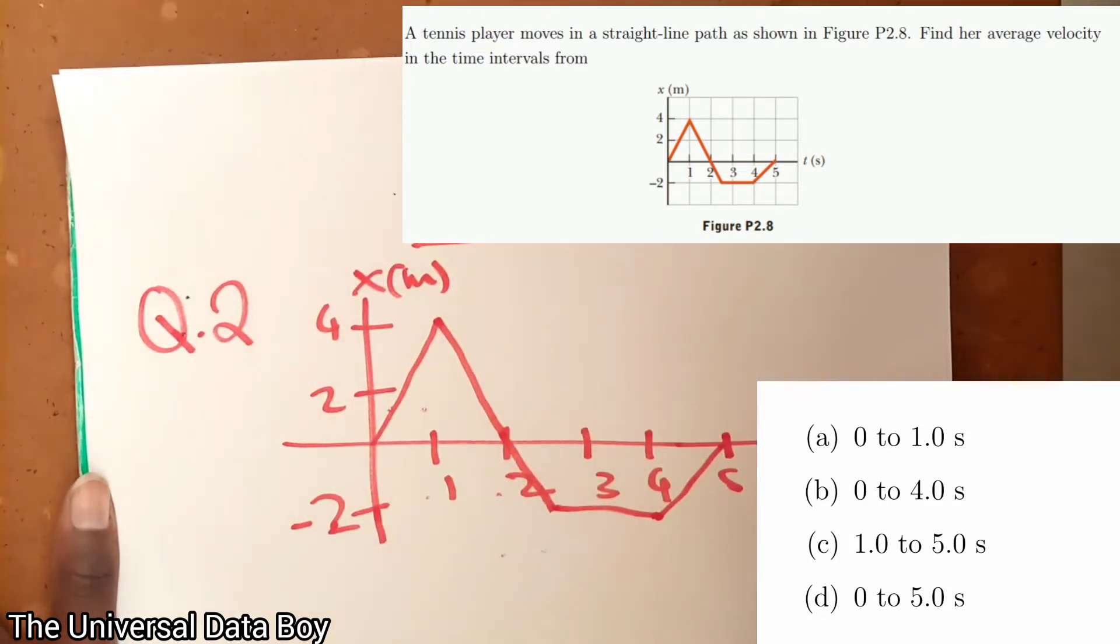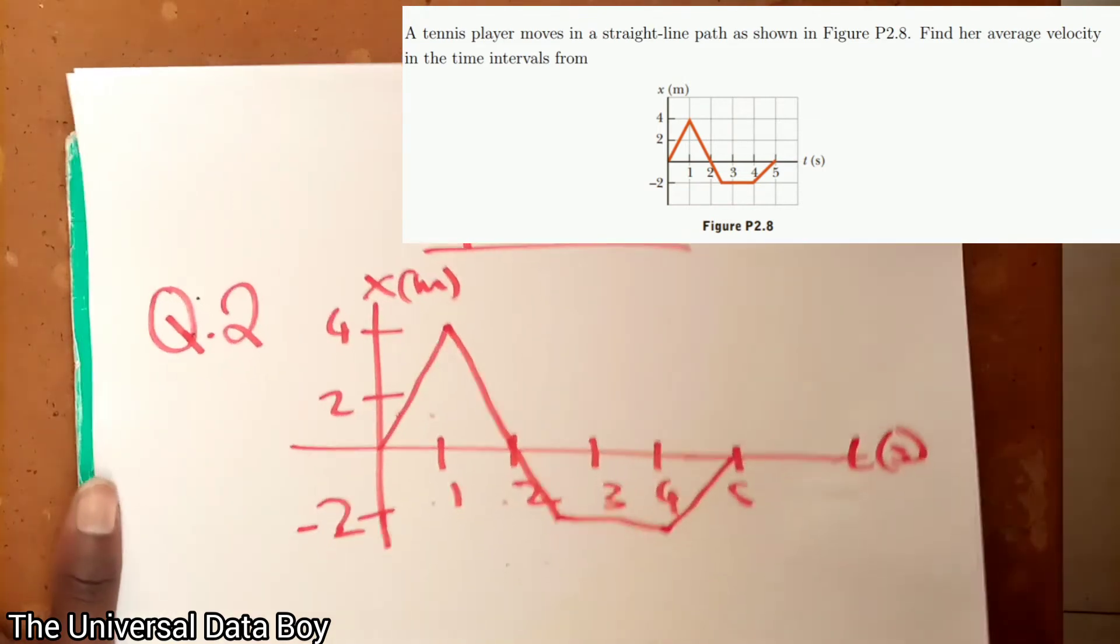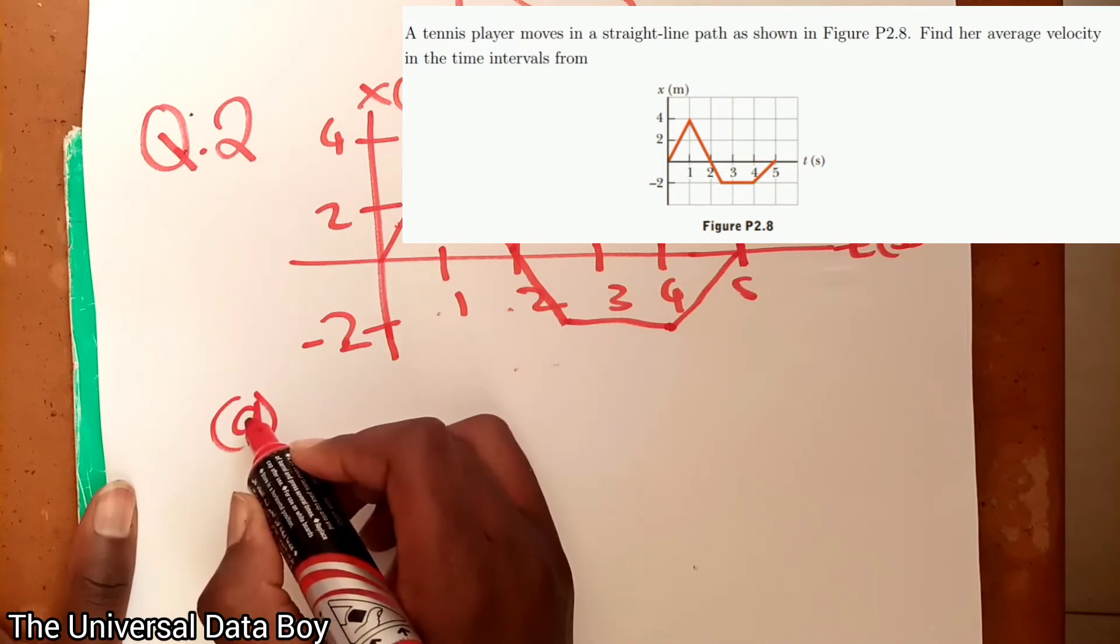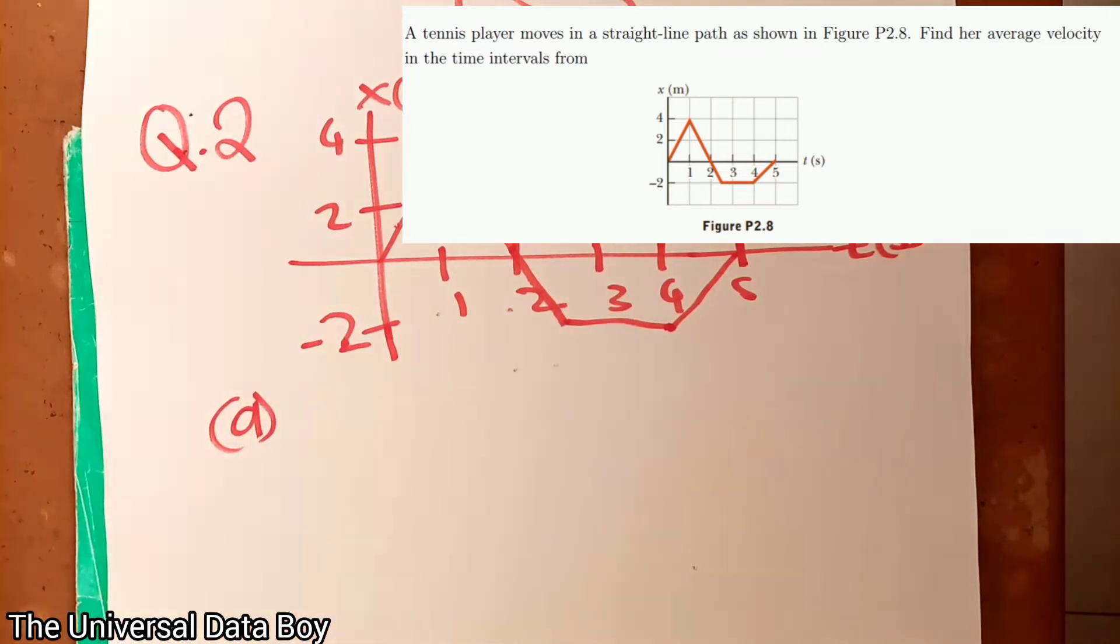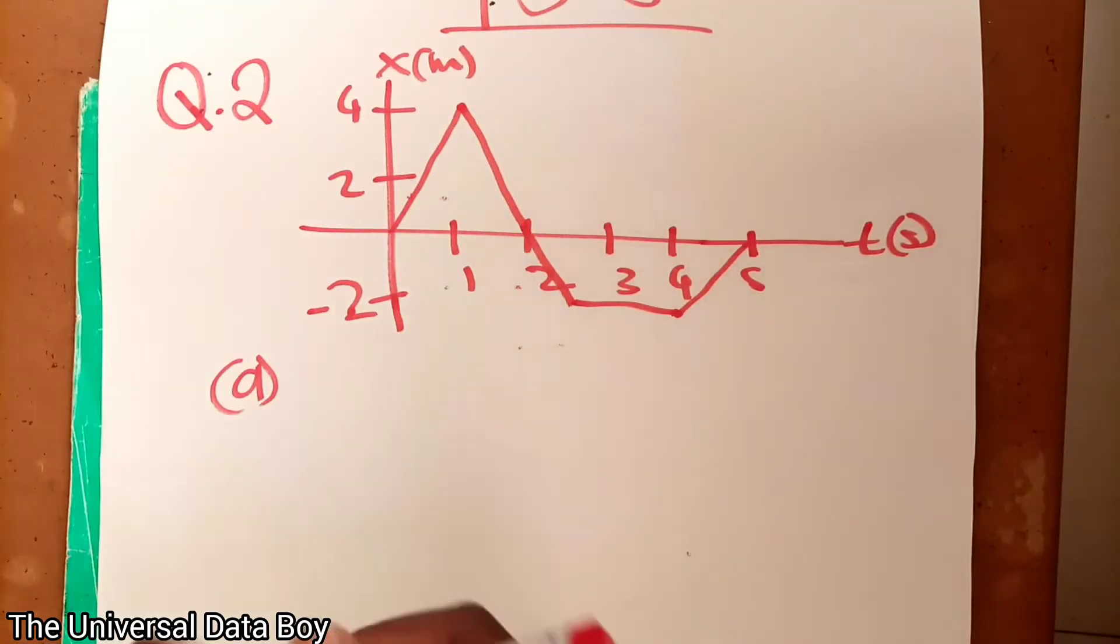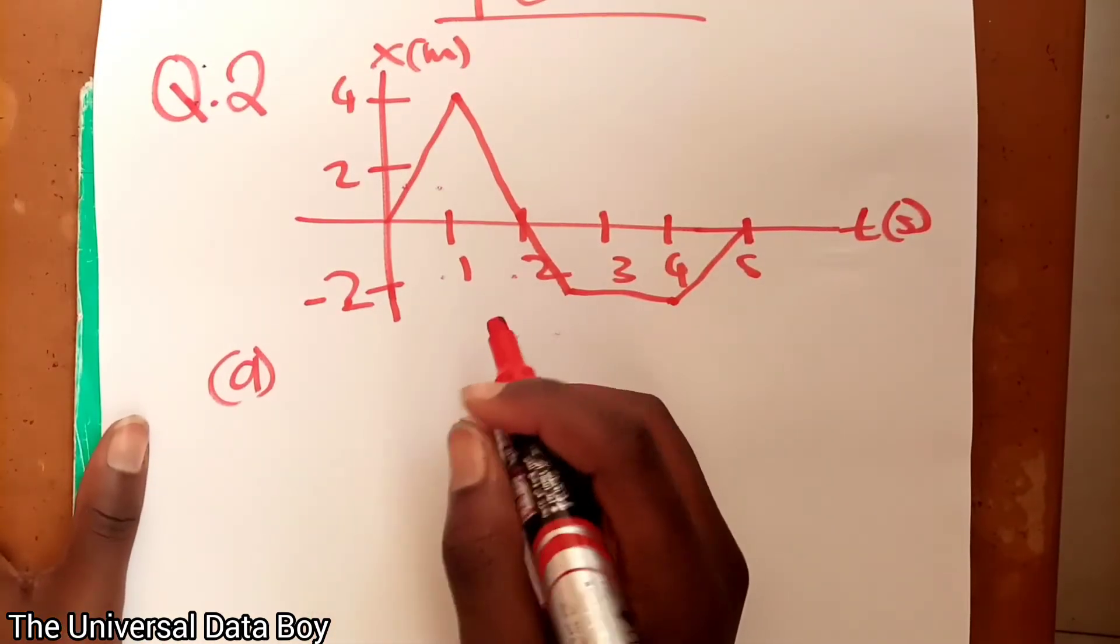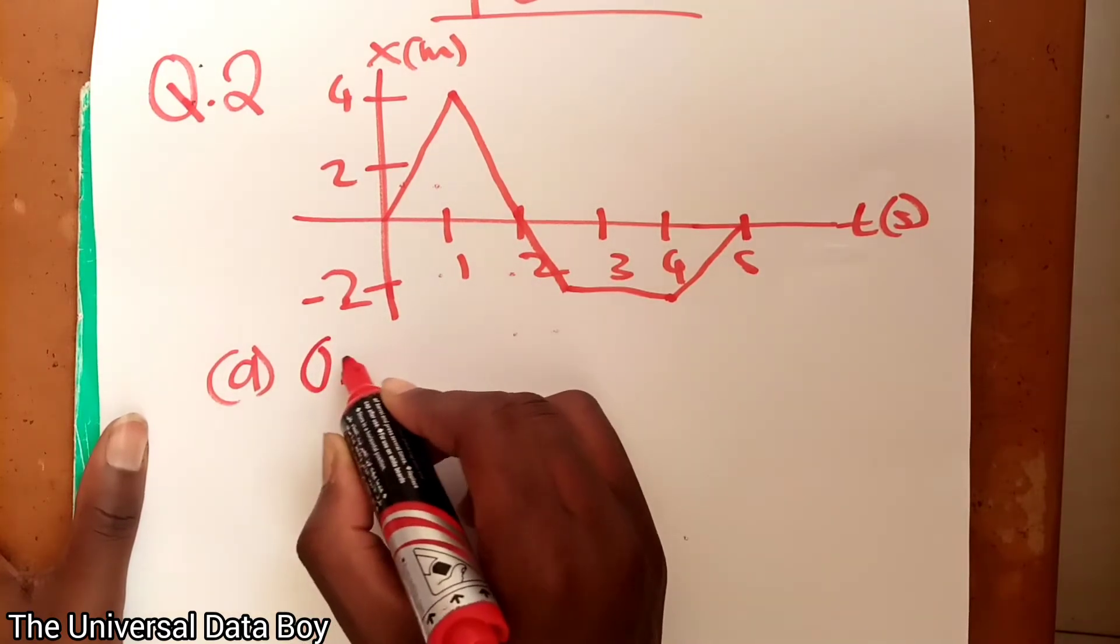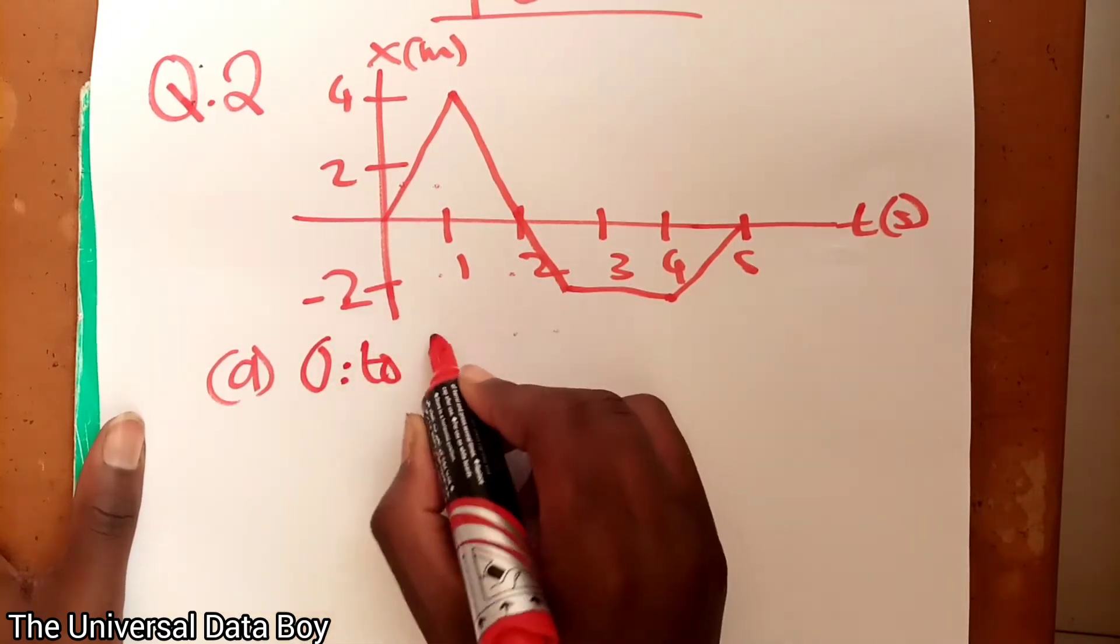This is the time in seconds. So now we are being asked to find. So A is from 0 to 1.